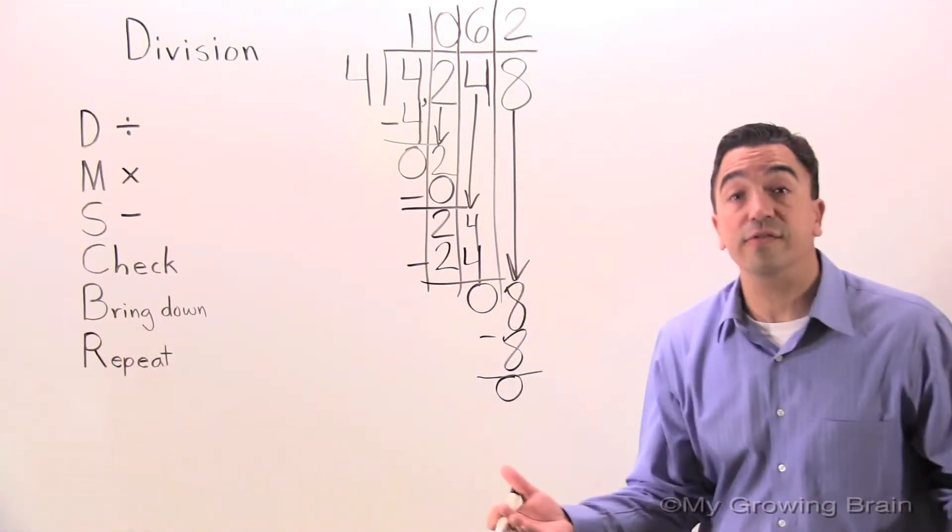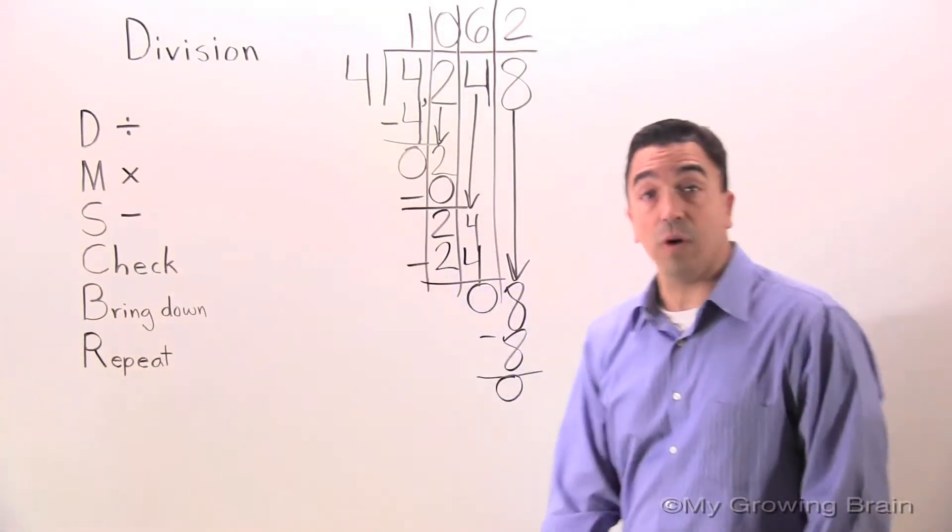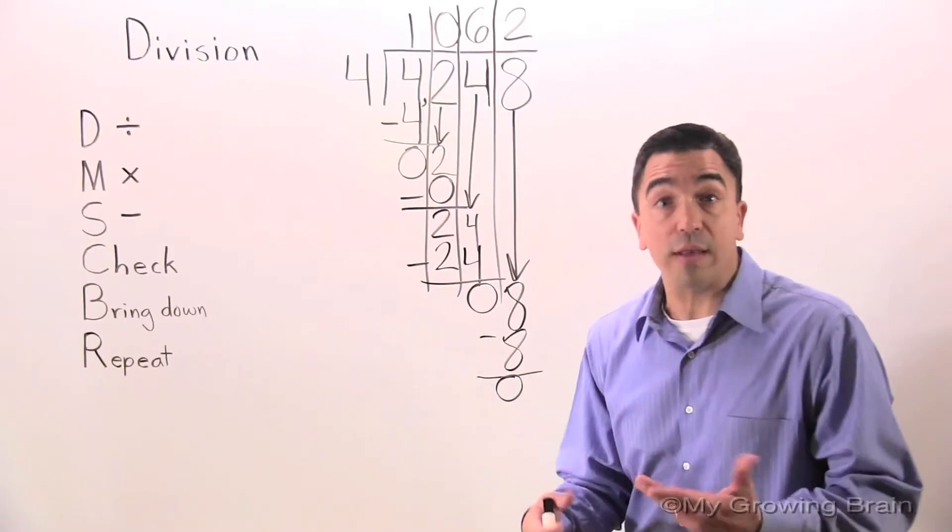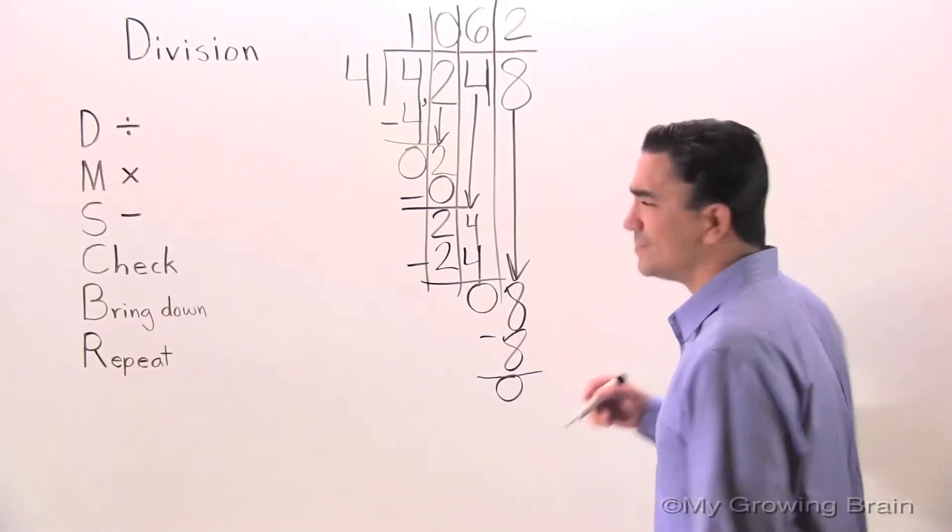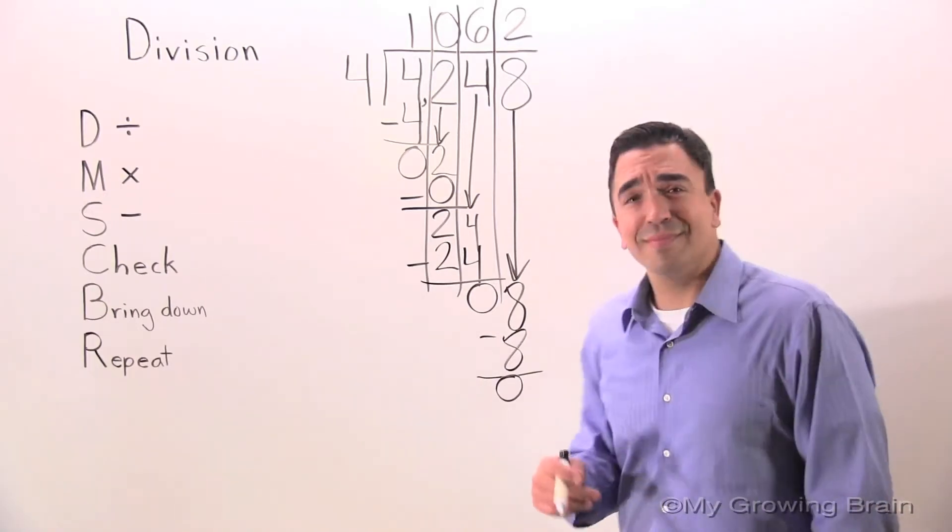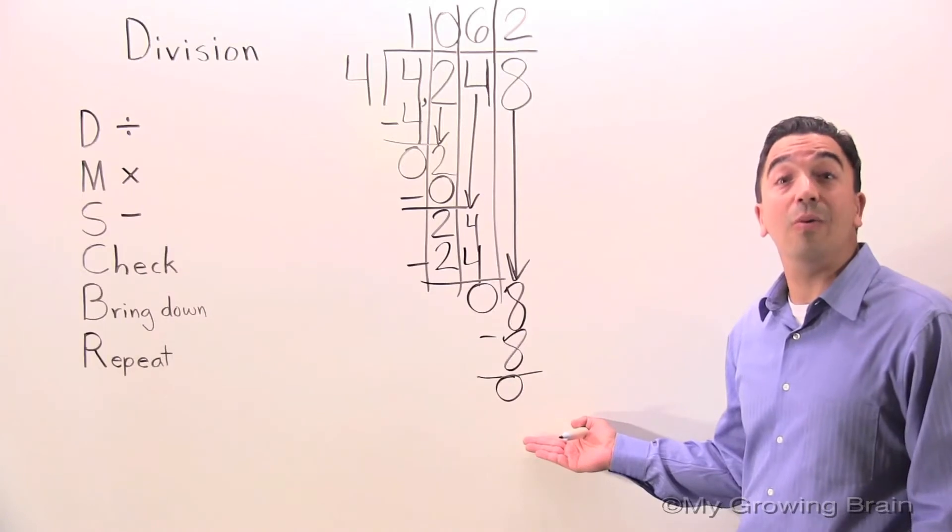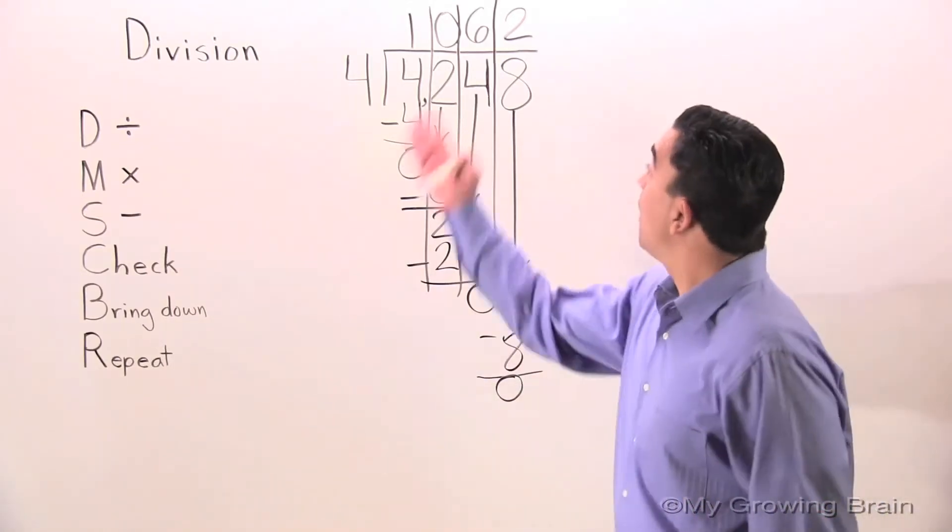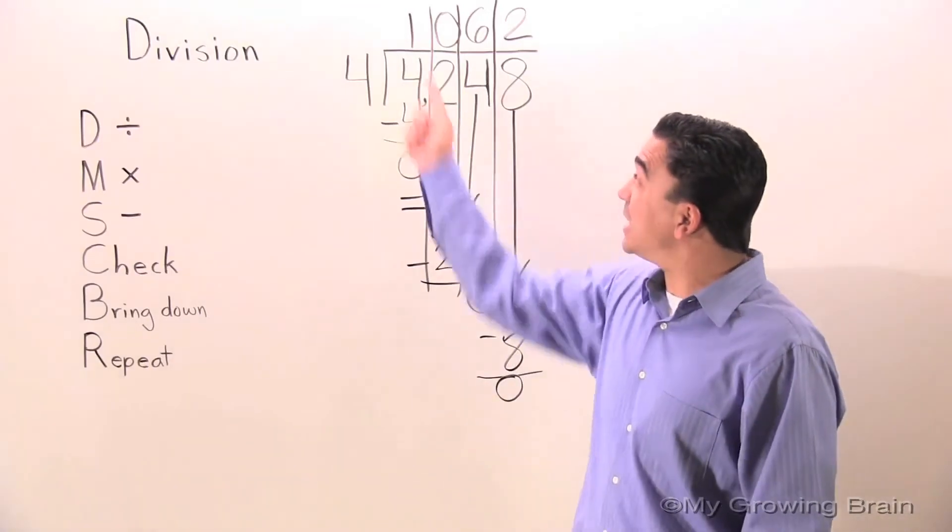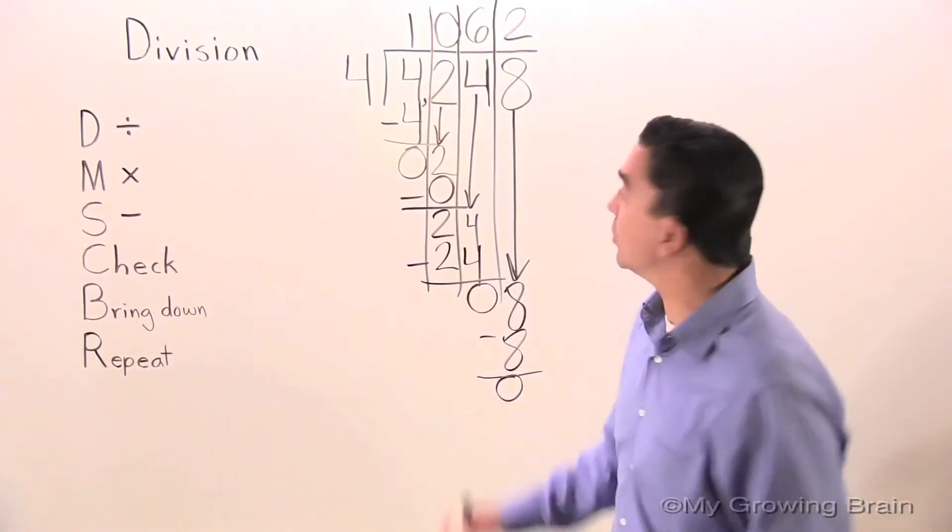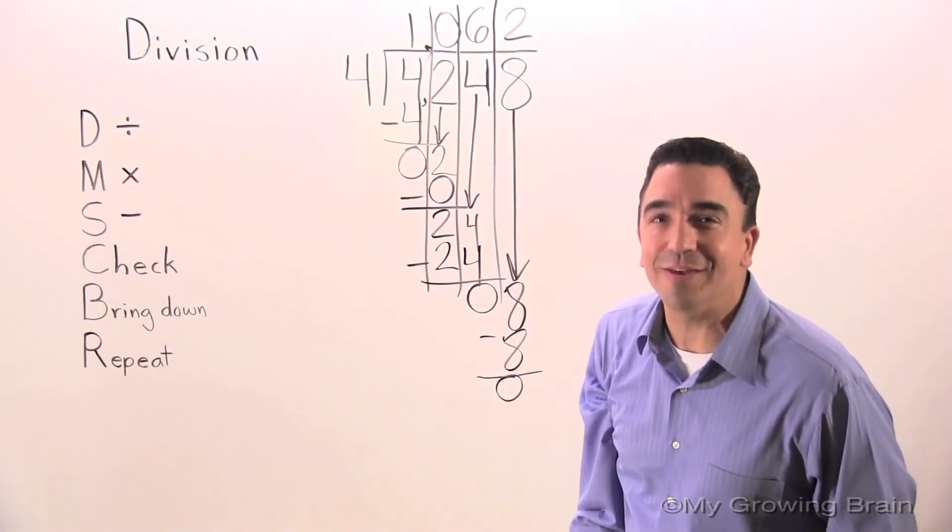Next step: check. 0 is less than 4. Therefore, keep on going. Next step: bring down. There's nothing there. We have a remainder: 0. Therefore, 4,248 divided by 4 is equal to 1,062.